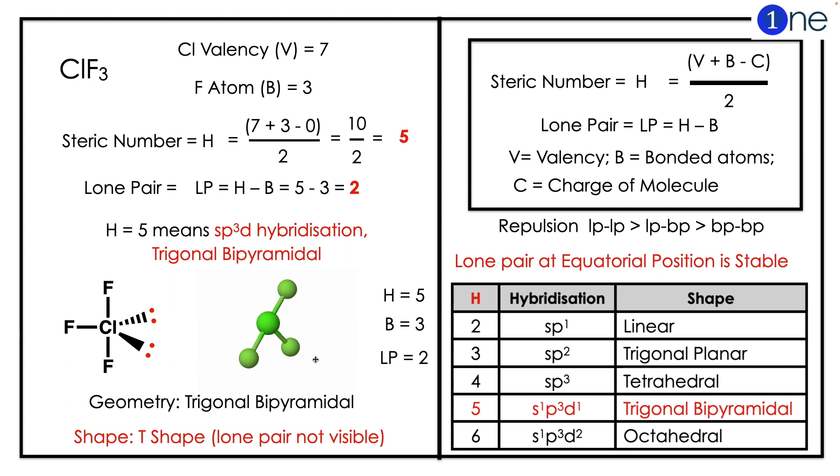Seven, fluorine atoms are three, so (7 + 3) divided by 2, which gives 5. Then lone pair will be H minus B, which equals 2. So H = 5 means sp3d hybridization with two lone pairs. The lone pairs occupy equatorial position.